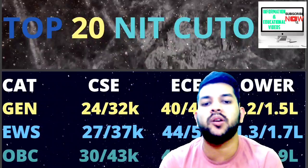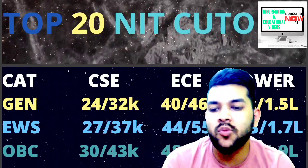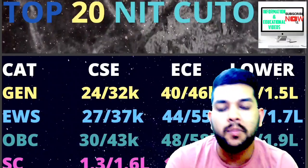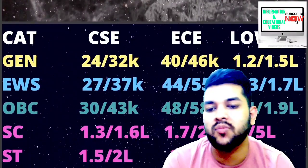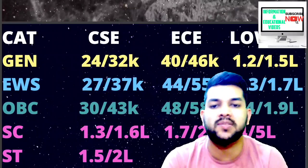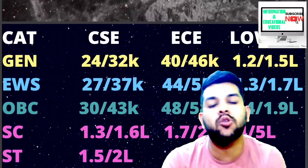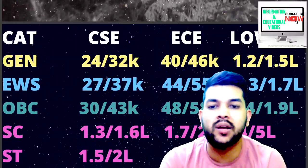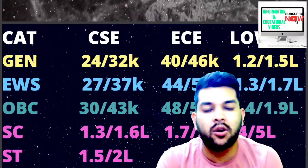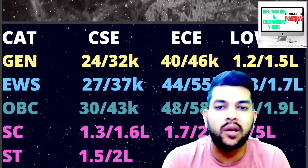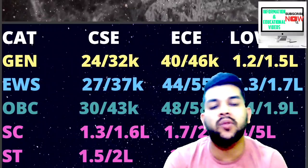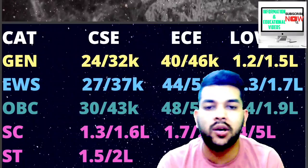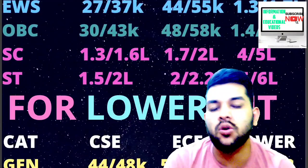For SC in top 20 NITs: 1.3 lakh / 1.7 lakh / 4 lakh for male, and for ST: 1.5 lakh / 2 lakh / 5 lakh. These are expected cutoffs up to the second round of CSAB counseling. In the first round you may not get at that rank, but after first round many students surrender seats, so those seats go to next-rank students in round two — you will likely get a college then.